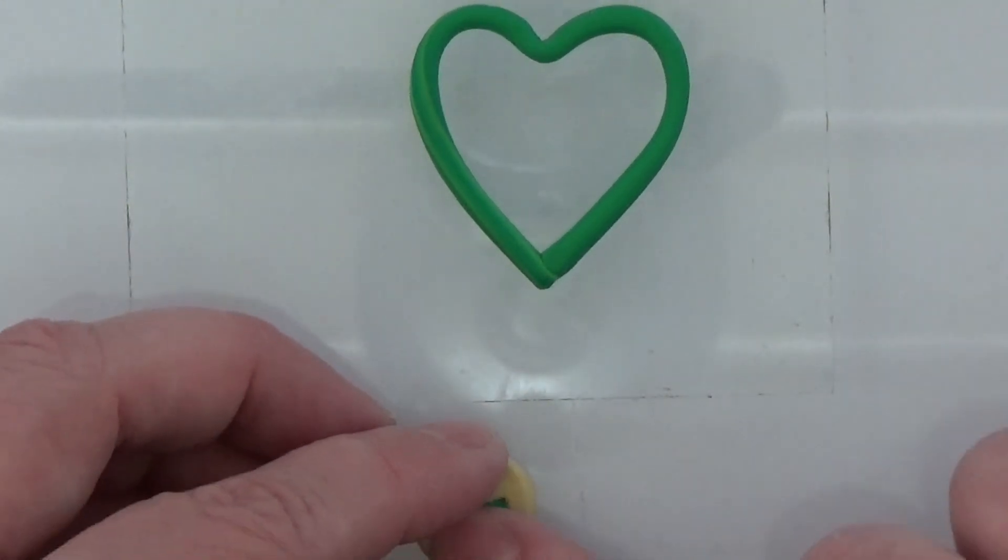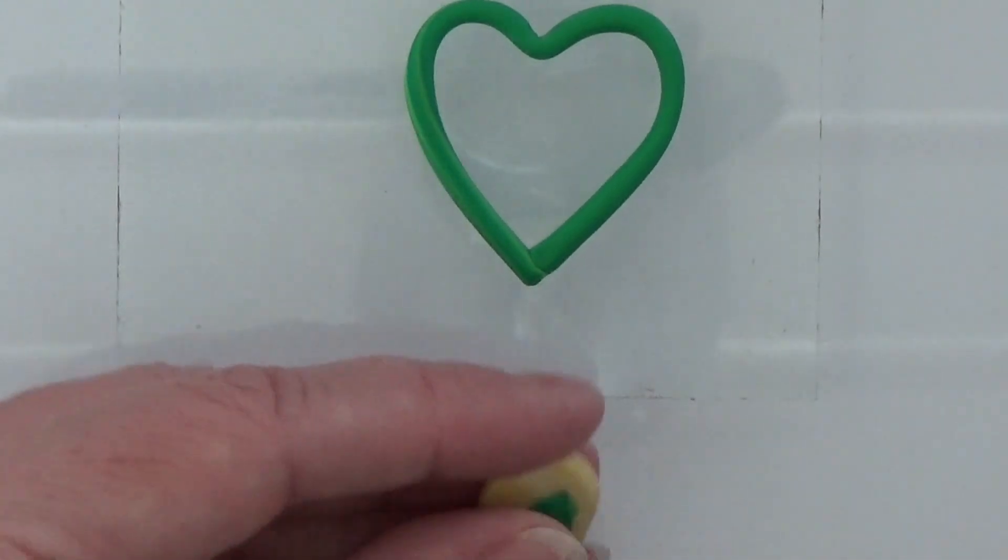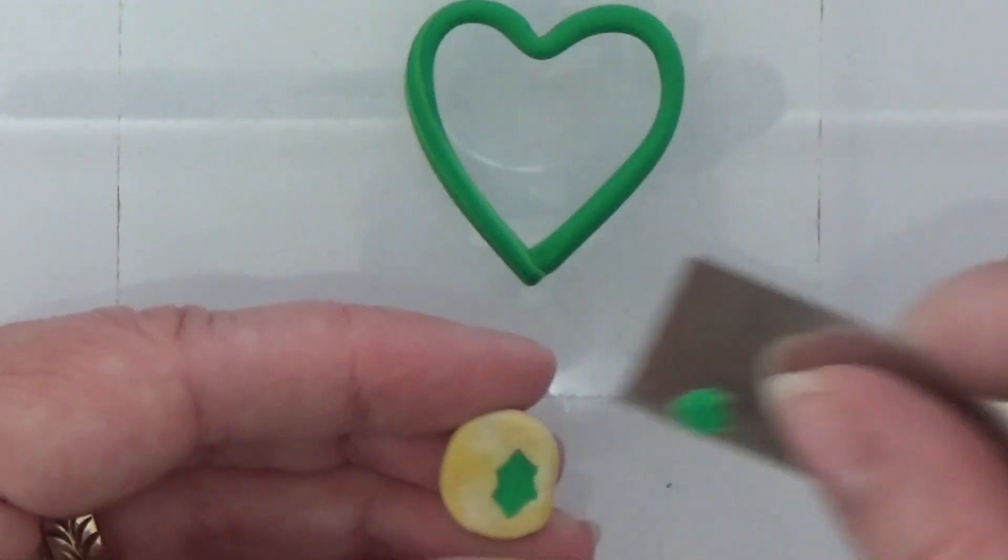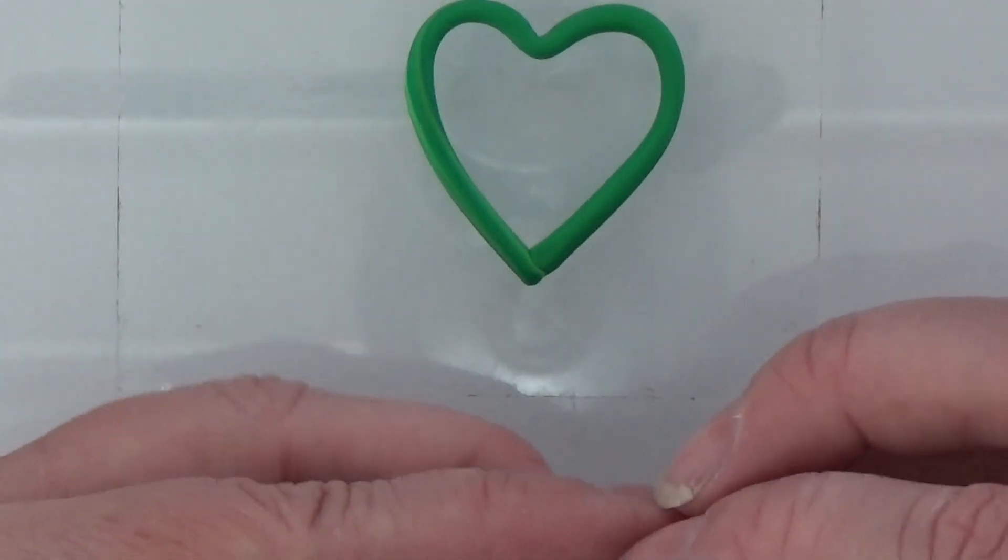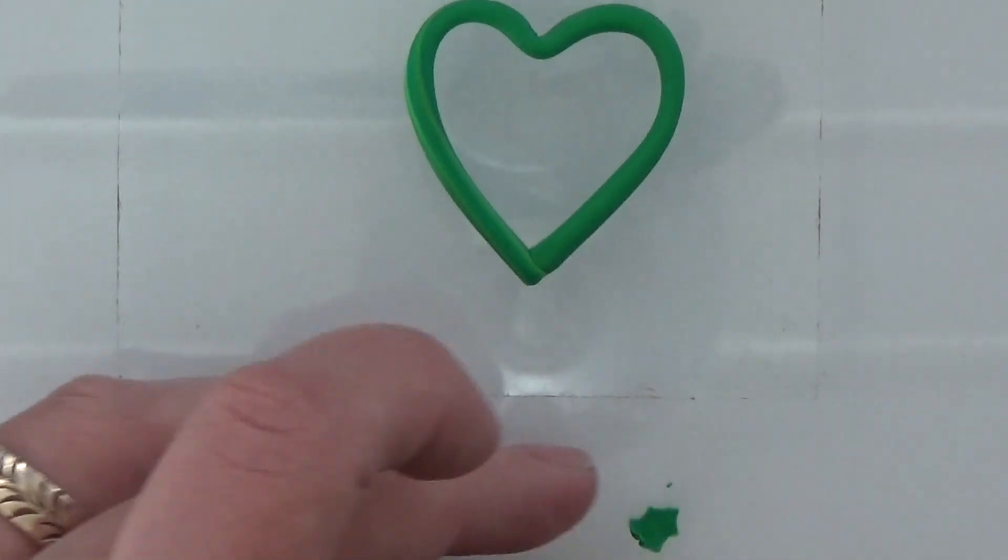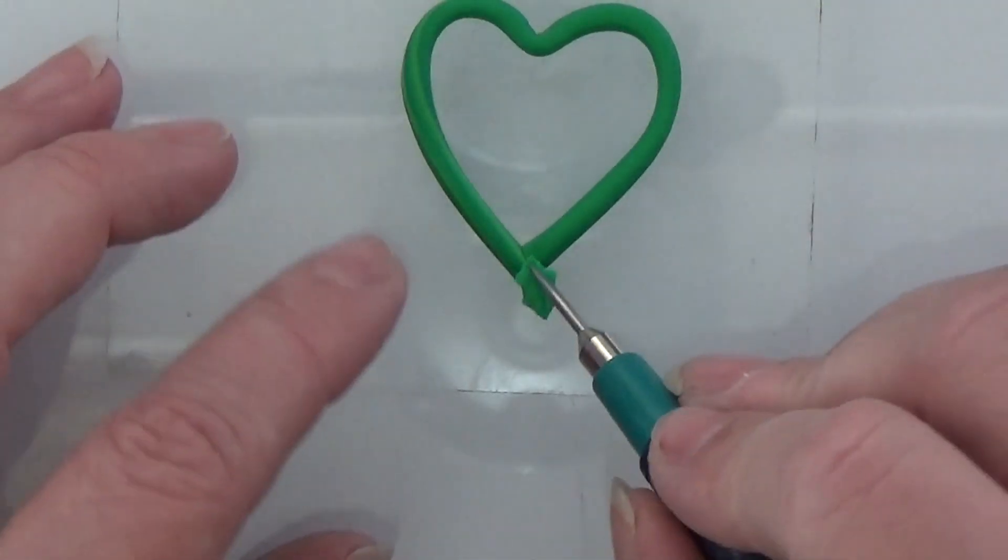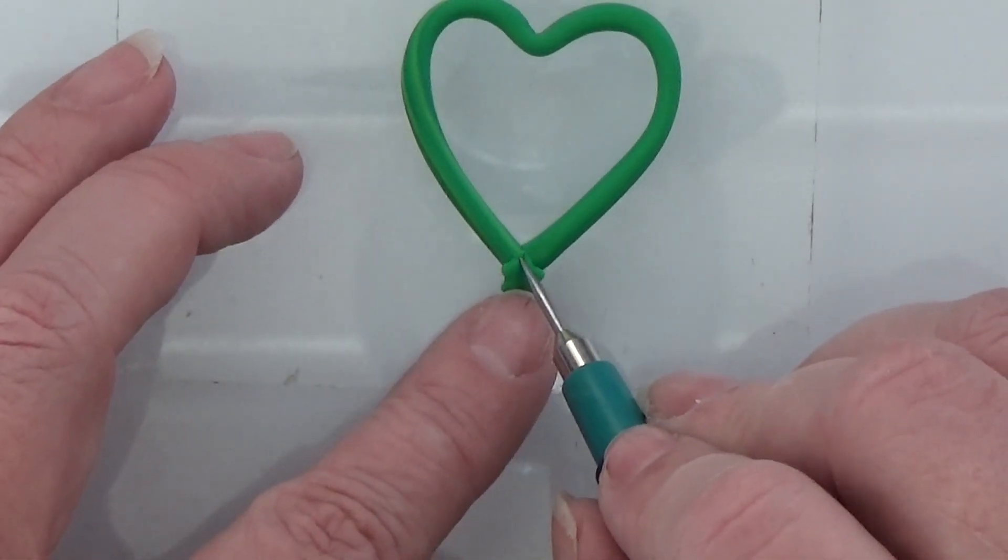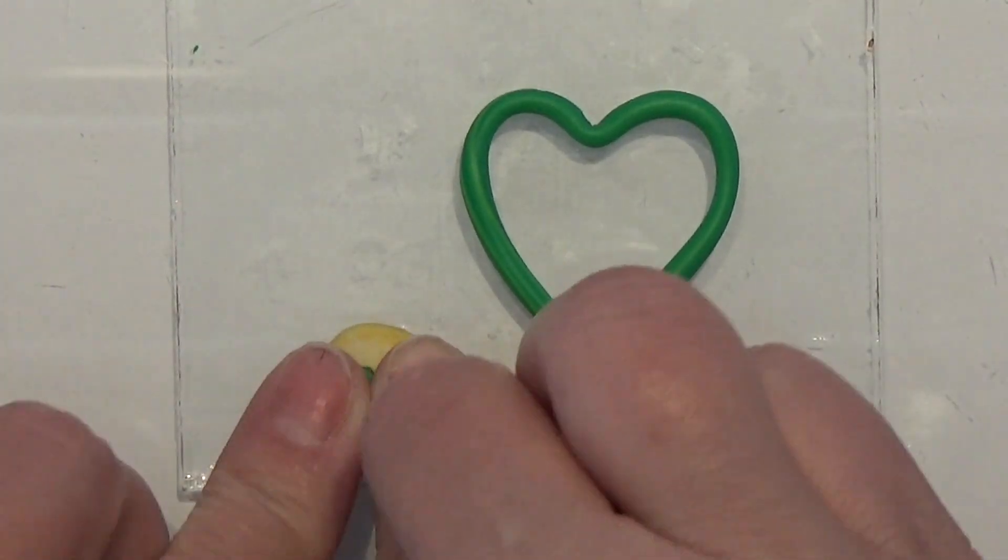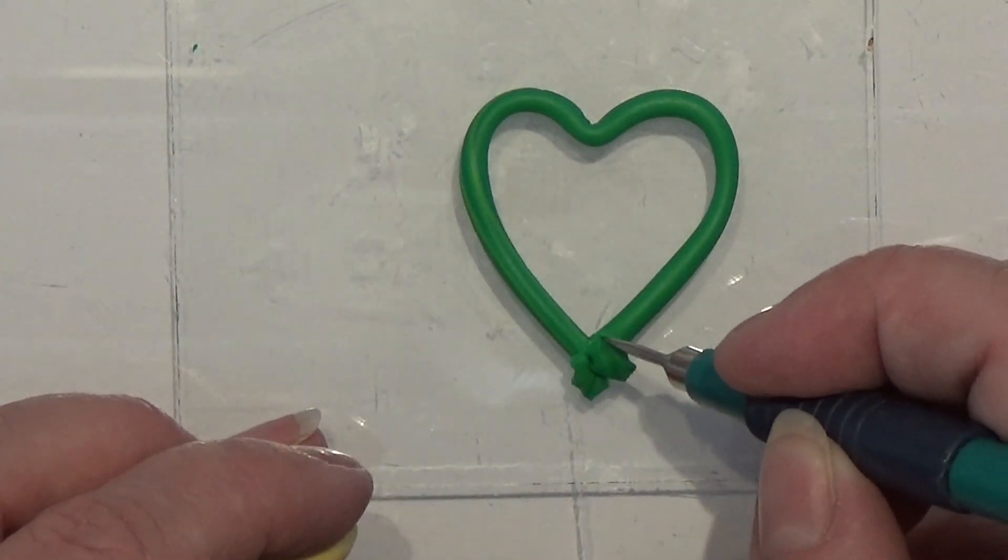If you have excess clay on the mold you cut it off with your sharp blade, like that, and you squeeze it out. Then I take my leaf and I'm going to start here at the bottom of my wreath.